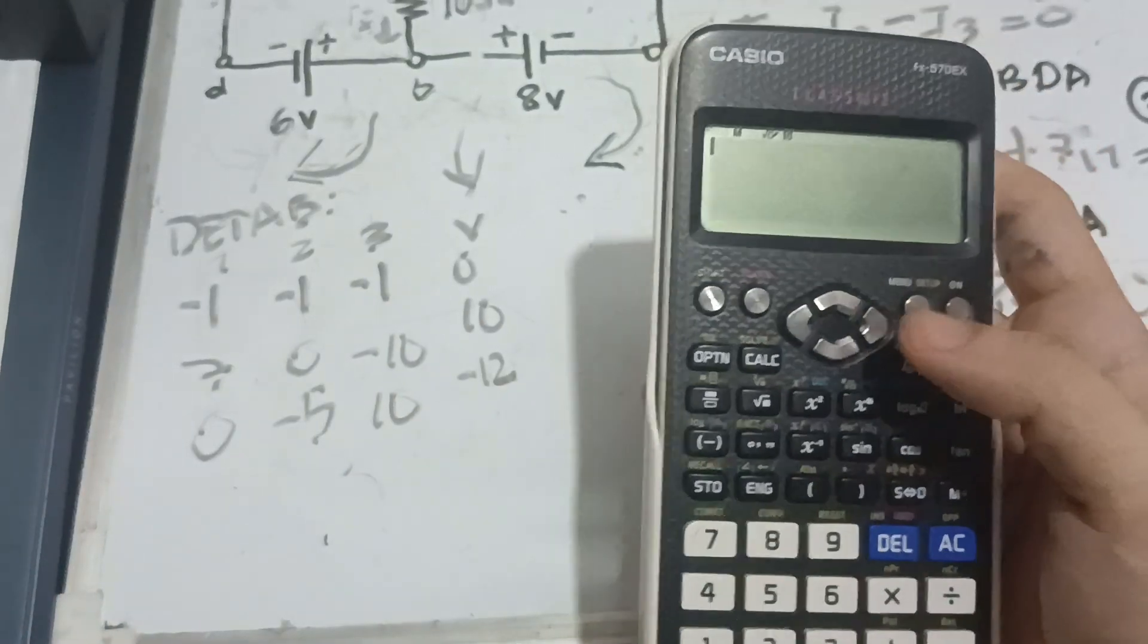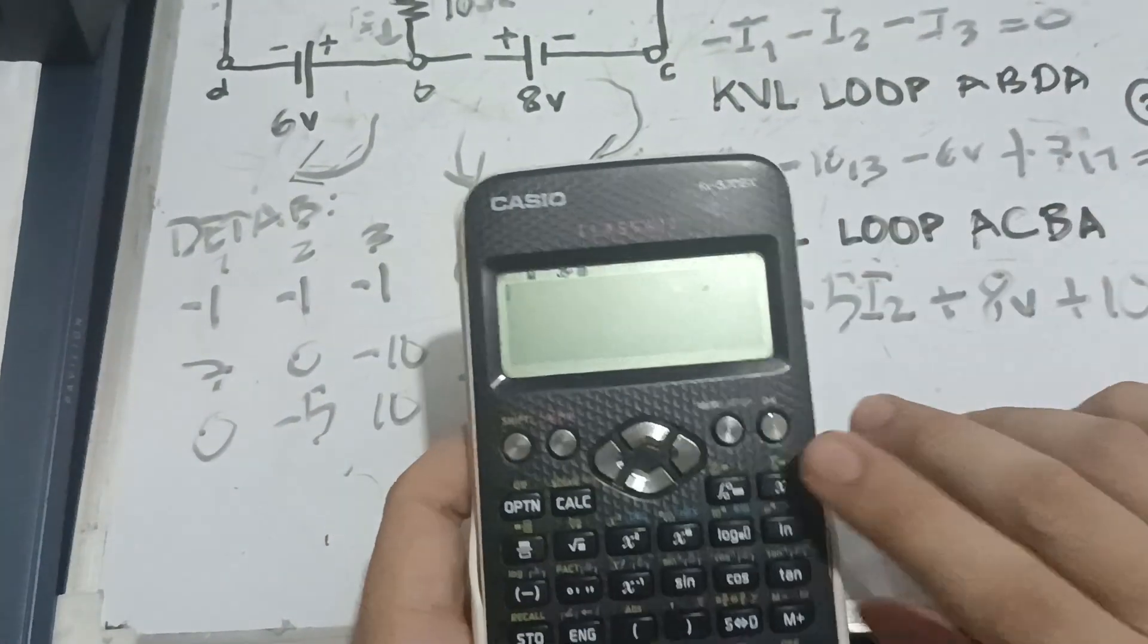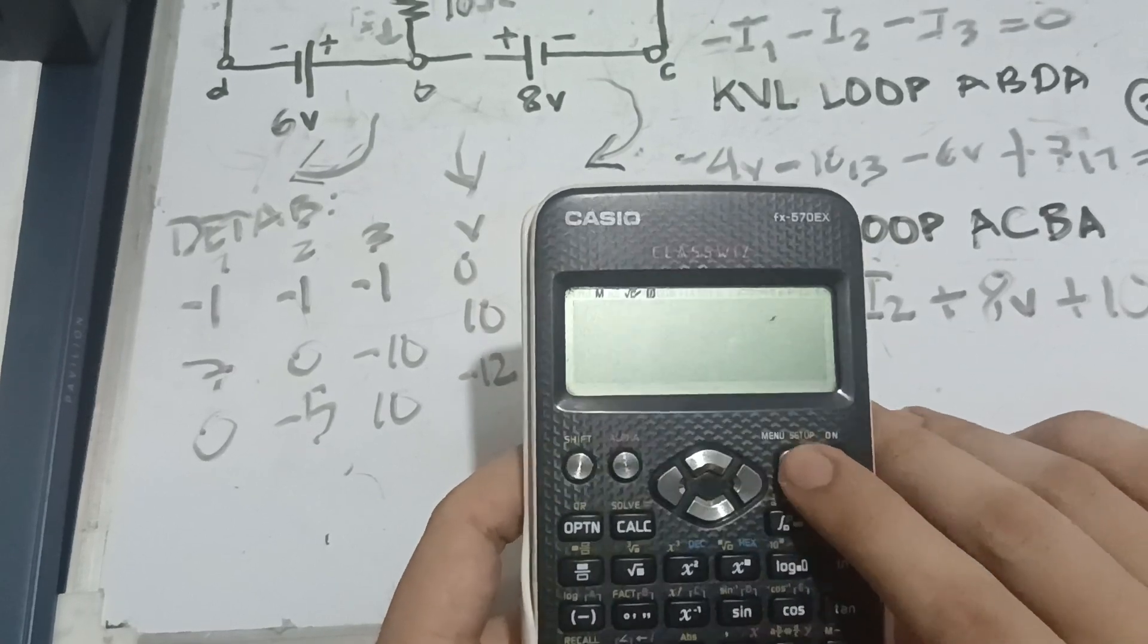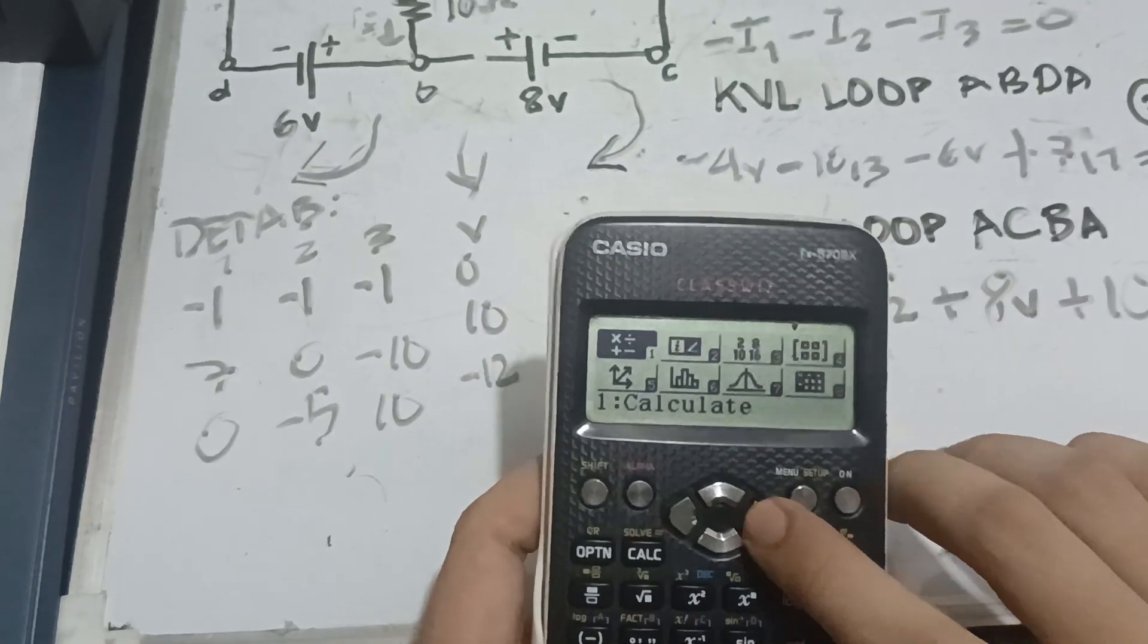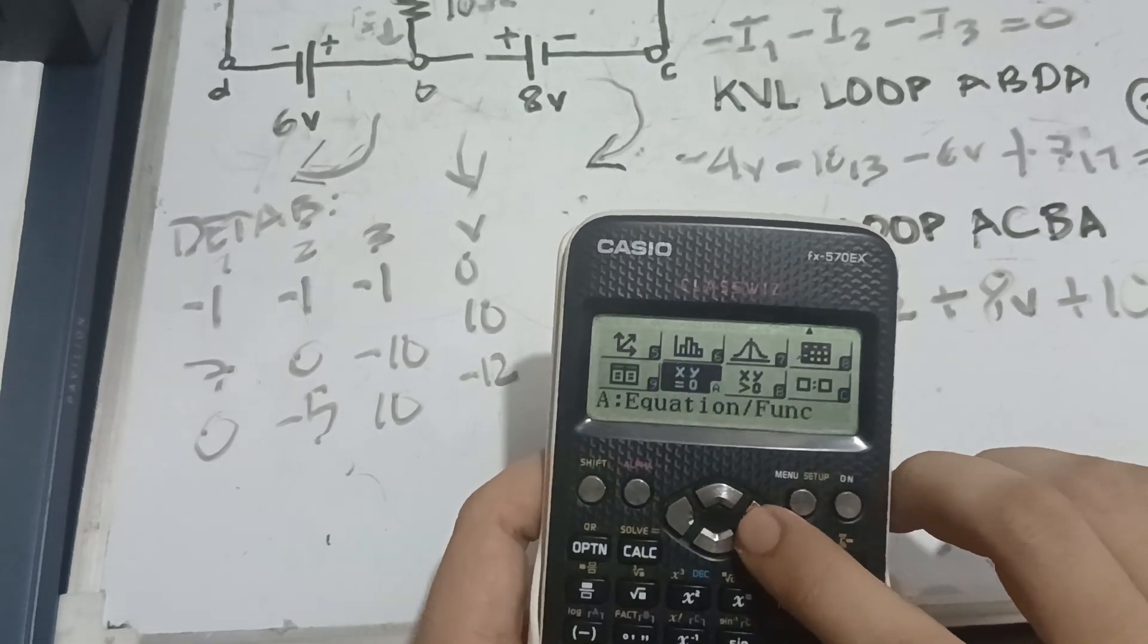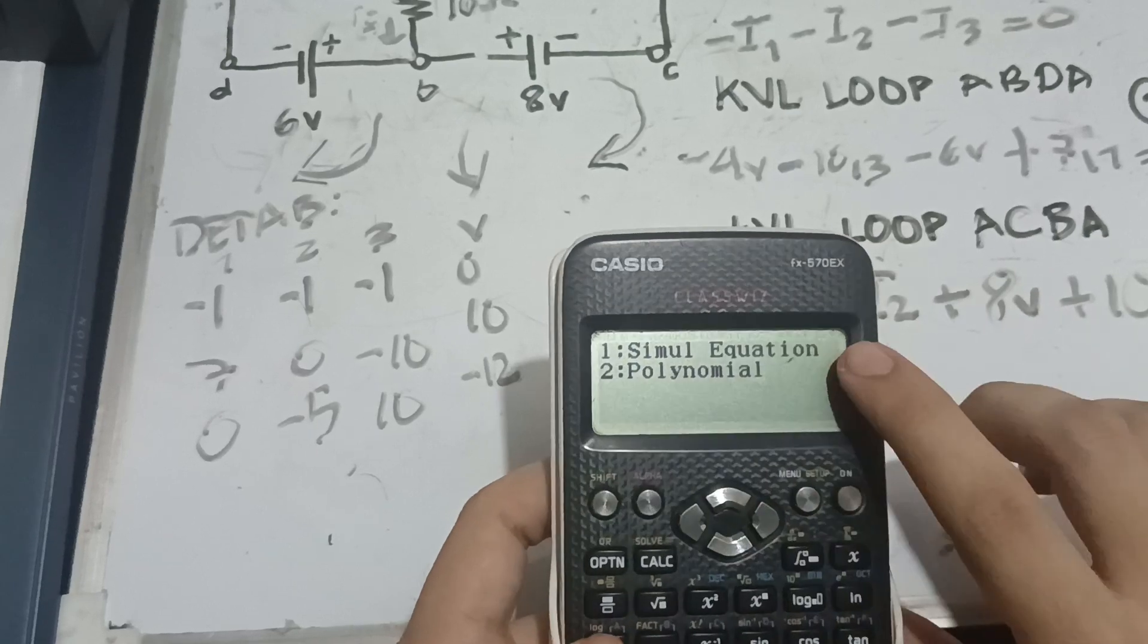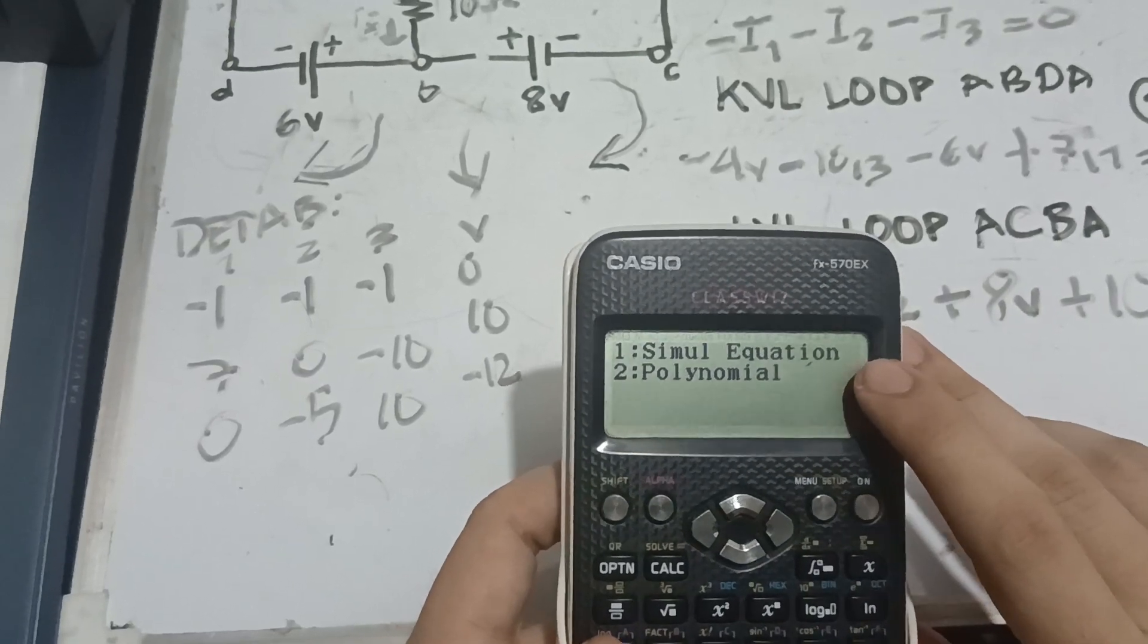Now, starting is the basic view of our calculator. Just press the menu or mode. And, you're going to see all the selection. You need to go to equation or function. And, select this one. Select number 1, simul equation.